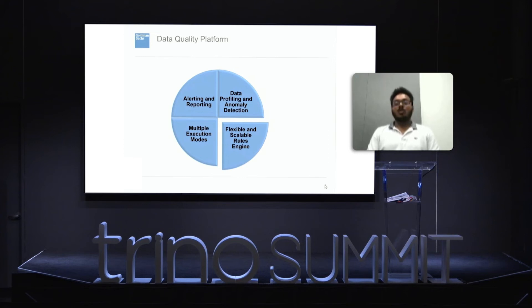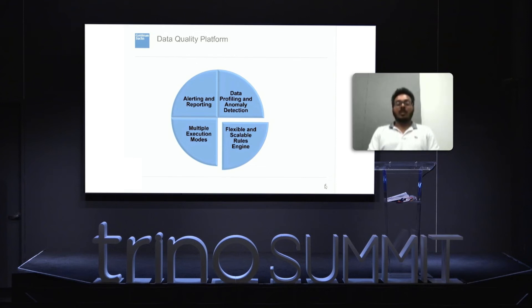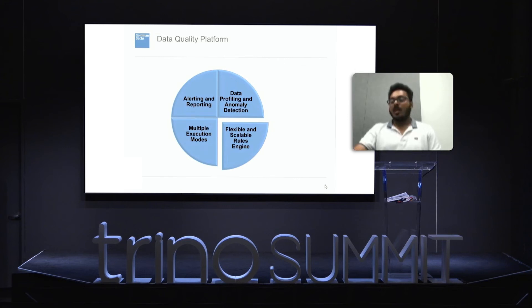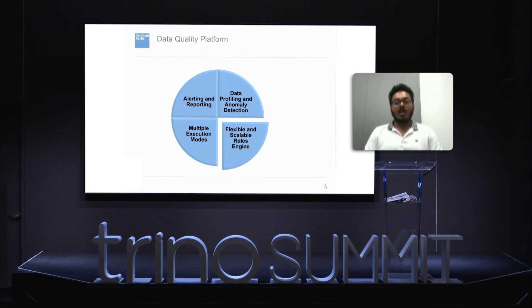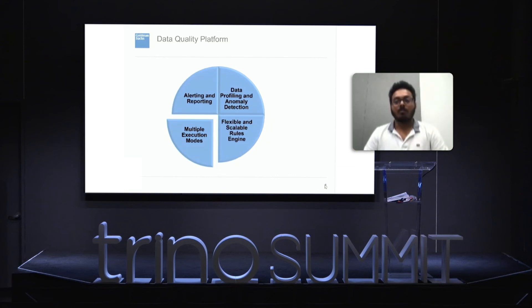The next core feature is a flexible and scalable rules engine. Apart from auto-suggested rules, the platform offers a flexible mechanism to handcraft user-defined rules. These rules can be written in multiple languages including Java, Scala, and Python. The platform also has numerous templated out-of-the-box rules that require no coding and can be configured on any data set. All configured rules — platform generated or user configured — can be executed in a distributed architecture that scales horizontally, and these rules are executed in parallel.